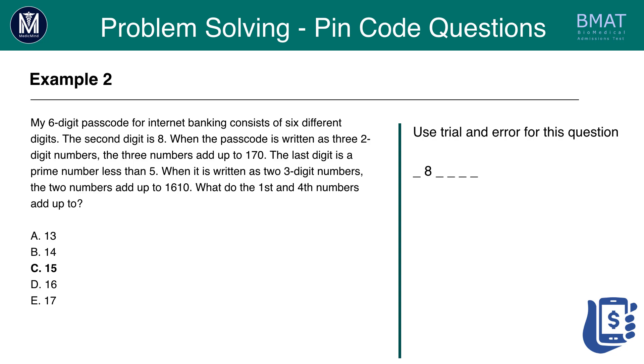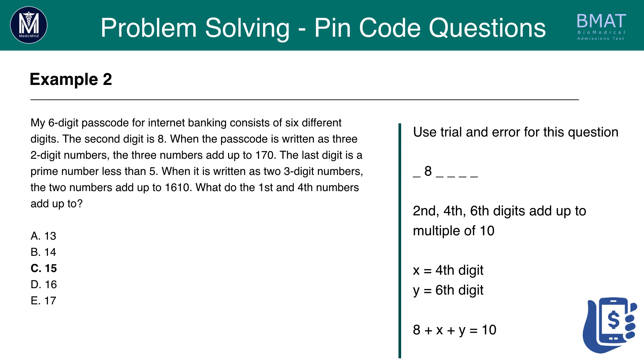First off we write out the information that we know. We know that the second digit is 8. We know that the second and fourth and sixth digits must add up to a multiple of 10, because the three two-digit numbers add up to 1610, so whatever they add up to has to end in zero. Let's call X the fourth digit and Y the sixth digit. Since we know the second digit is 8, and we know that the second digit plus fourth digit plus sixth digit has to add up to a multiple of 10, let's form this equation: 8 plus X plus Y equals 10.